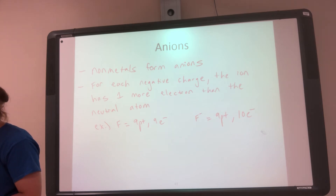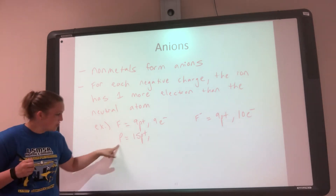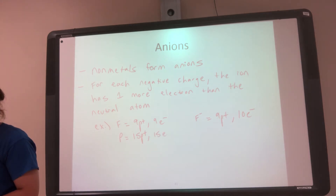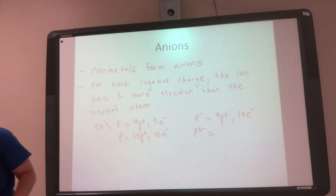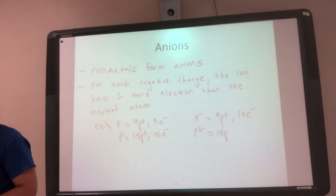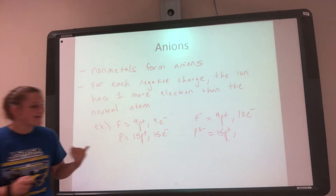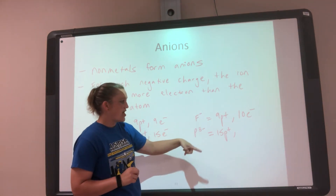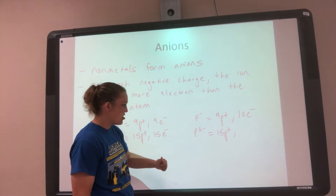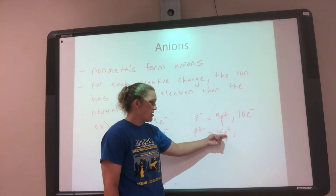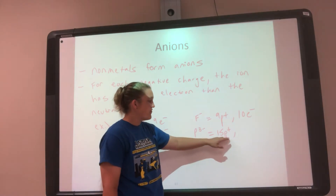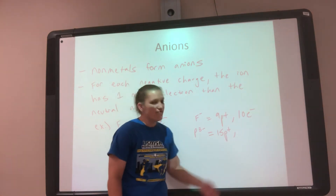Another example: phosphorus. Its atomic number is 15, so that's 15 protons. Neutral, so it also has 15 electrons. Phosphorus likes to be a negative three anion. Same element, so it still has 15 protons, but now we need three more electrons to make it negative three compared to neutral. So if it has 15 protons, it would have 18 electrons.